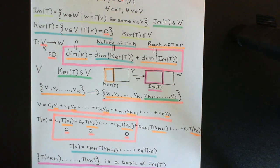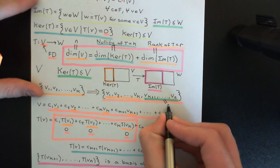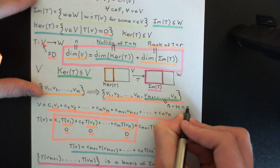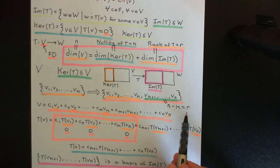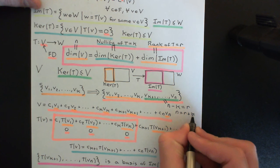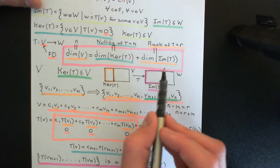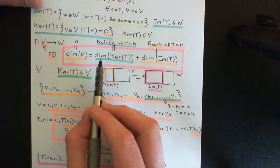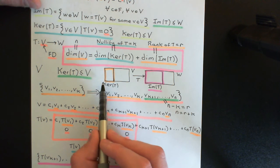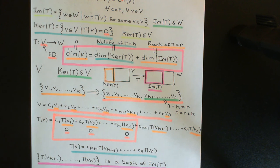To finish the argument for why the dimension formula is true: the dimension of the image is just how many basis vectors of the domain lie outside the kernel, which is n minus k. So the rank r equals n minus k, which rearranges to n equals r plus k. Adding the number of basis vectors for the image to the number for the kernel gives the total number for the entire domain vector space — that's why the dimension formula is true.